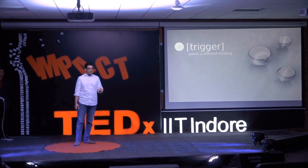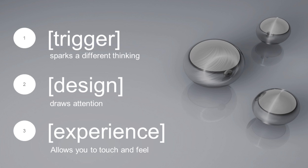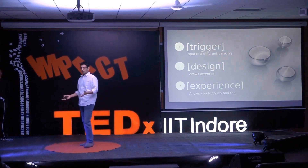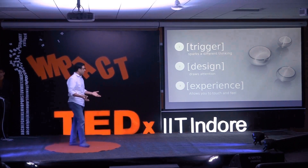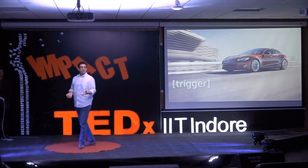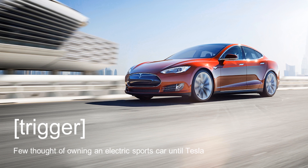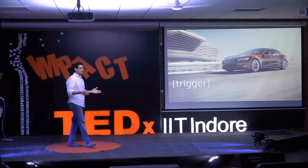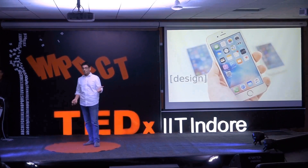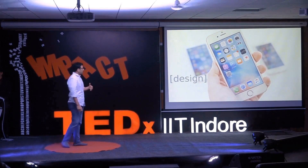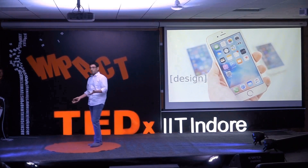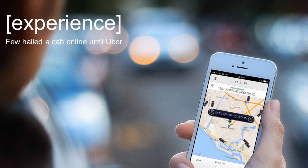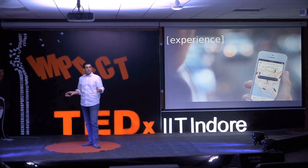We looked at three things that would shape the products that we built. The first thing you need is the trigger — the trigger sparks a difference in thinking. The design should draw attention, and people should aspire to have that product. And the experience that you create should allow you to touch and feel. Examples of where that's used: Tesla — when they built that car, everyone always dreams of owning a sports car, but Tesla built an electric sports car and that triggered the electric vehicle revolution — today you have 100 companies trying to build EVs. Apple put great design into their smartphone — we didn't aspire to have smartphones before Apple created the iPhone, and every button is flushed with the rest of the phone. And Uber created the experience — from when you get into your cab to when you get out, you don't even need to take out your wallet. It's seamless.